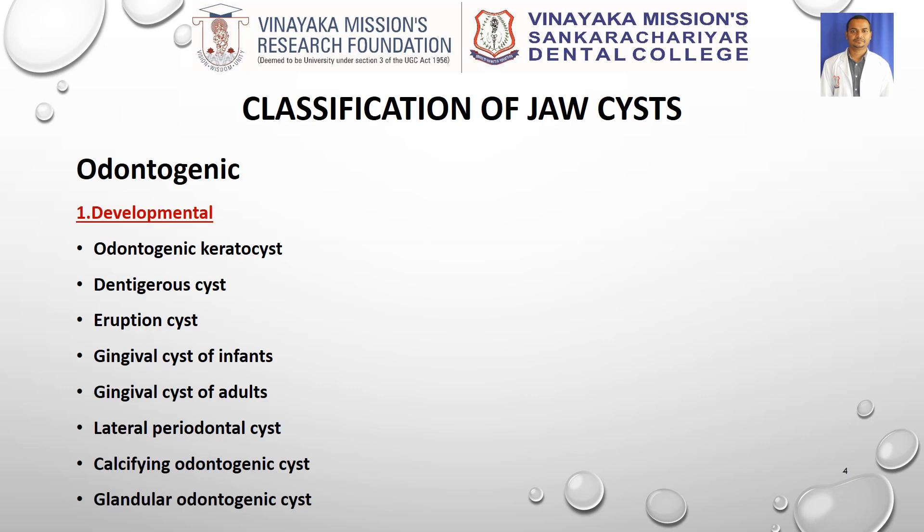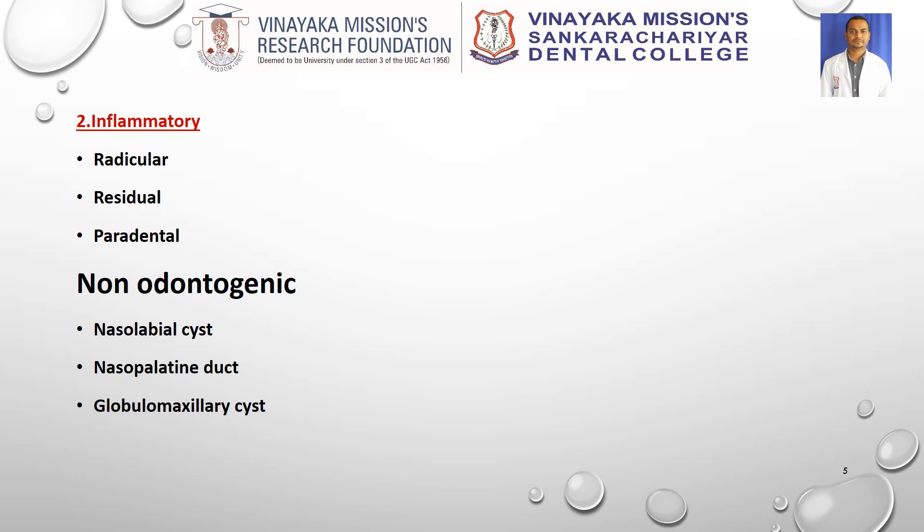Coming to the classification of jaw cysts. Odontogenic cysts are classified as developmental and inflammatory. Developmental includes OKC, dentigerous cyst, eruption cyst, gingival cyst of infants, gingival cyst of adults, lateral periodontal cyst, calcifying odontogenic cyst, and glandular odontogenic cyst. Inflammatory includes radicular, residual, and paradental cysts.